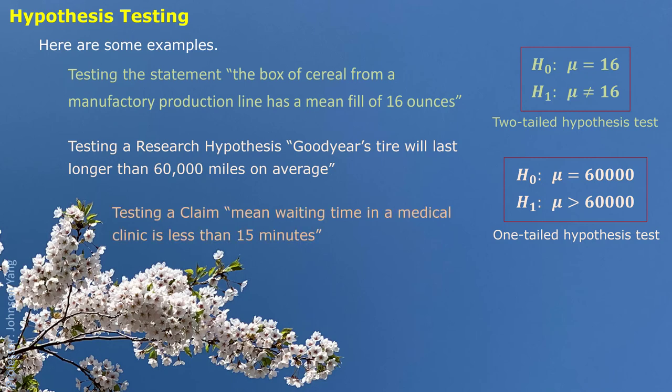Another example: in a medical clinic where patients wait for the doctor, the claim says the mean waiting time is less than 15 minutes. The potential tone says they do not have observations more than 15 minutes, so that part is set as impossible — we only need to check one side. We set up our null hypothesis as mu equals 15 minutes, and the alternative hypothesis as mu less than 15 minutes. This is also a one-tailed or one-sided hypothesis test.